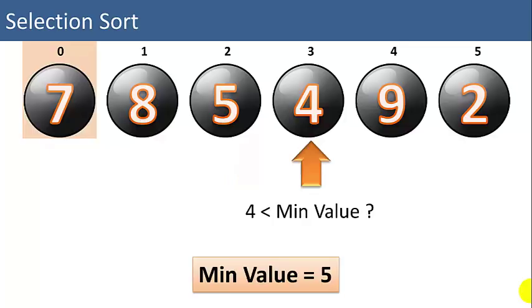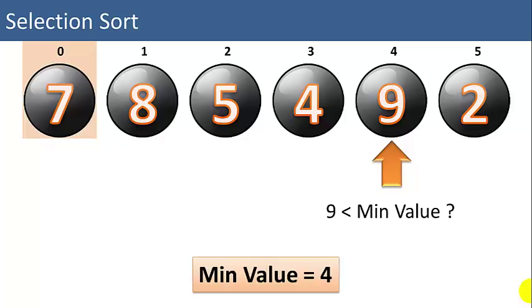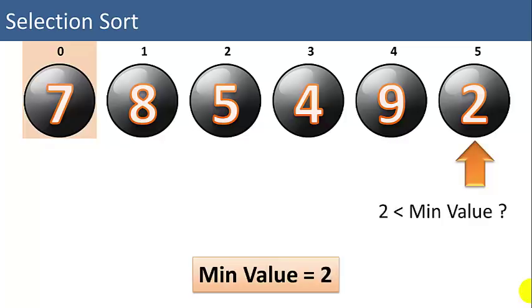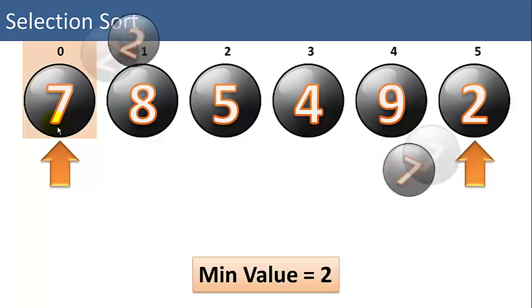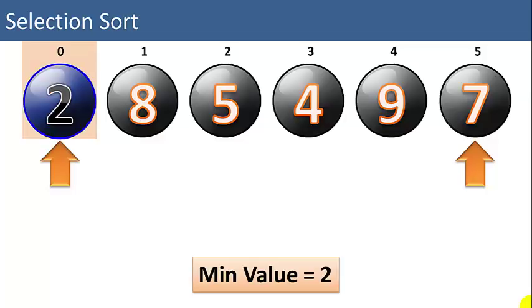Is 4 less than min value? Yes, so we'll assign 4 to min value. Is 9 less than min value? No. Is 2 less than min value? Yes. So we're done with our first iteration of the list. We found our smallest item — it's 2. We want to move that into the first position of the list, so we're going to swap the 7 and the 2. Now we're going to mark the 2 as already sorted. We know the 2 is the smallest item in the list and it's in the first position, so it's sorted.